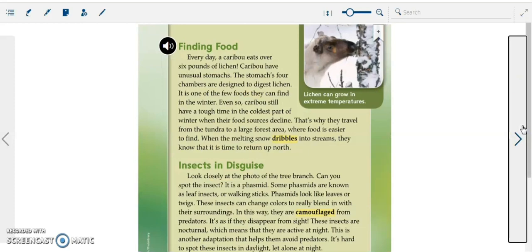Finding food. Every day a caribou eats over six pounds of lichen. Caribou have unusual stomachs. The stomach's four chambers are designed to digest lichen. It is one of the few foods they can find in the winter. Even so, caribou still have a tough time in the coldest part of winter when their food sources decline.